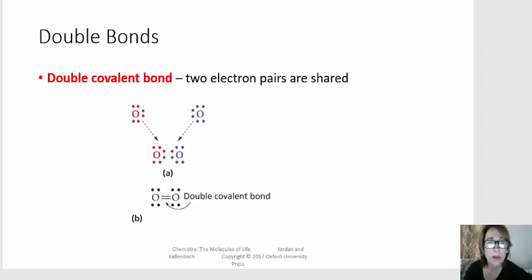And the octet rule is fulfilled. So if we count the number of electrons around each oxygen, I'll just count one and it will be the same for both: one, two, three, four, five, six, seven, eight. Remember the electrons that are bonding count for both atoms. And there we have a double covalent bond.